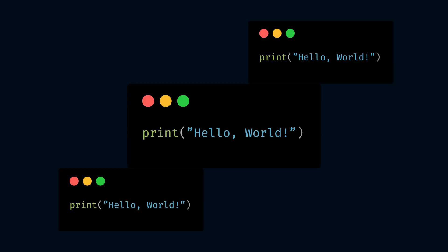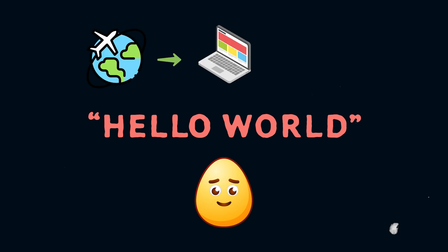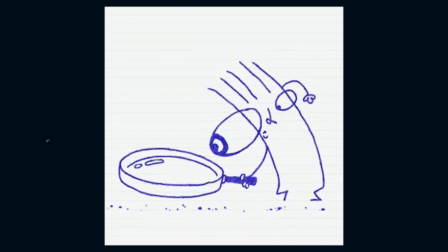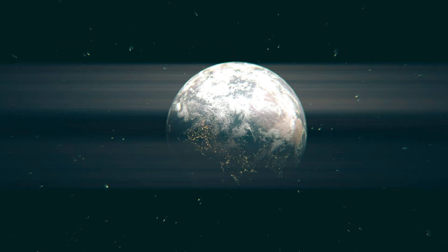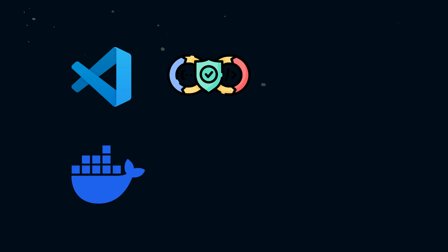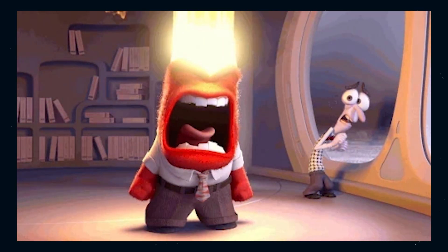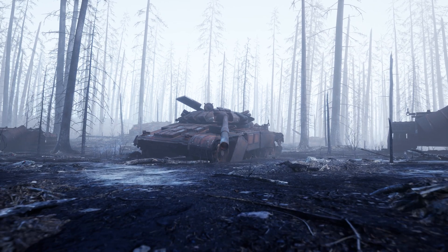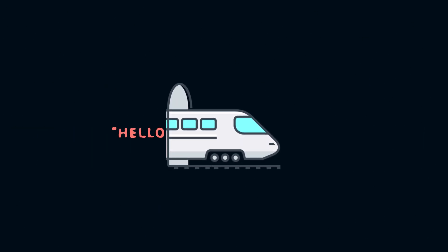It all starts with a simple line: hello world. You've probably typed it out hundreds of times, but how does this innocent little string travel from your local machine to the wild, unpredictable landscape of production servers, serving potentially millions of users? Today we are tracing the path of a single line of code as it transforms, evolves and ultimately becomes part of something much bigger — from code editors to CI/CD pipelines and from Docker containers to Kubernetes clusters.